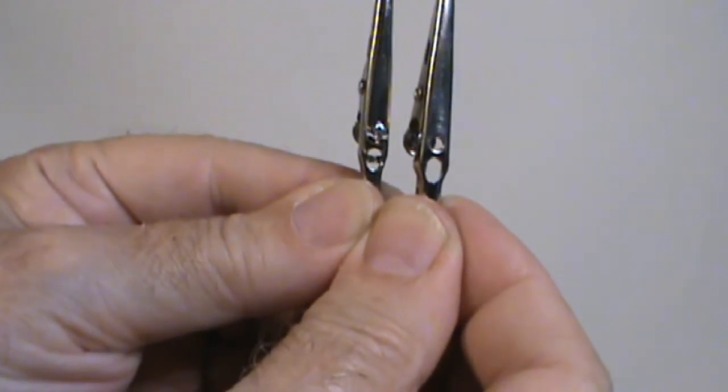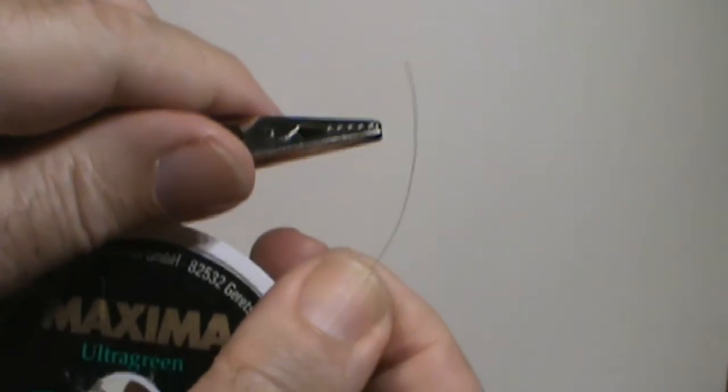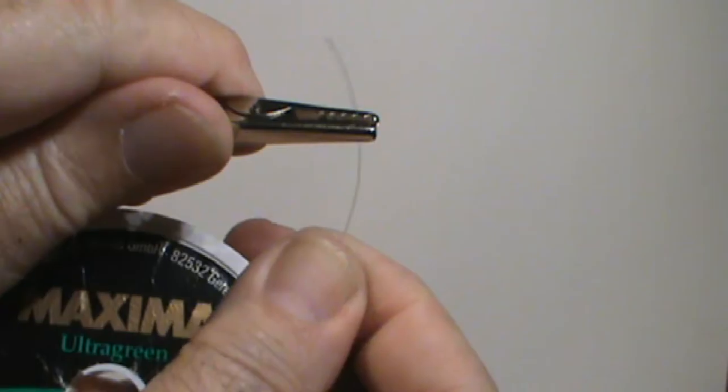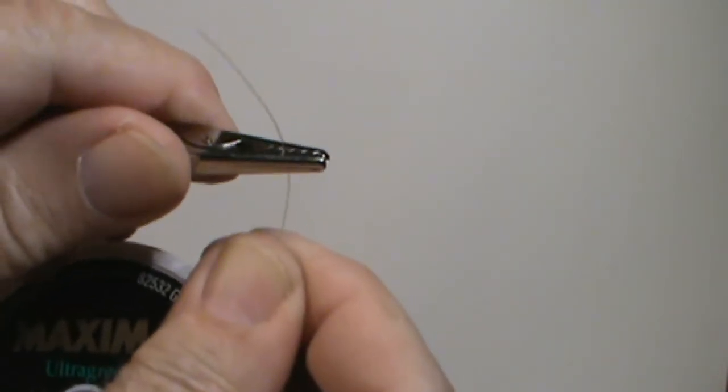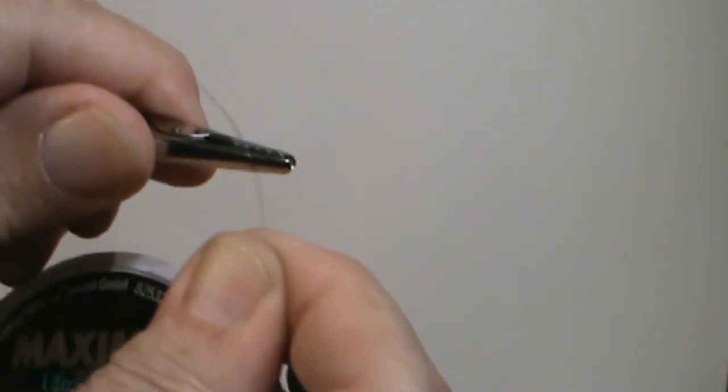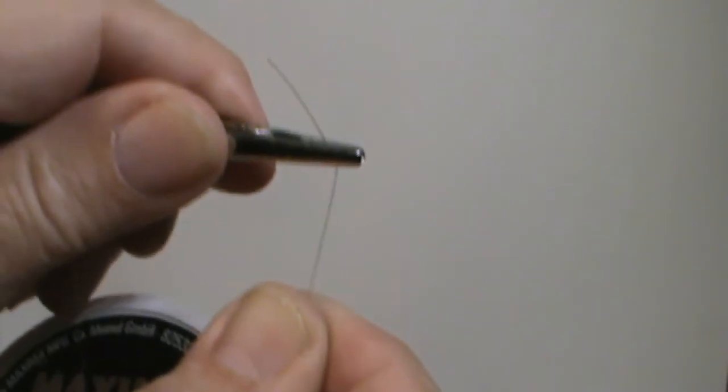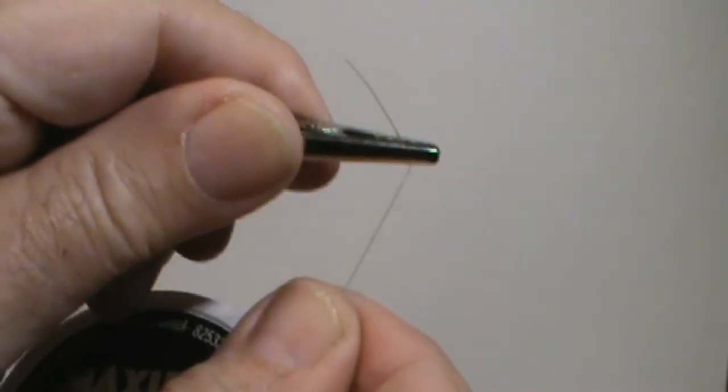Test the teeth of your alligator clip by putting leader in it like this. Pull tight and make certain that the leader does not slide through. Make sure it's nice and solid like this, because the teeth may not line up and so a lot of them will not be secure.